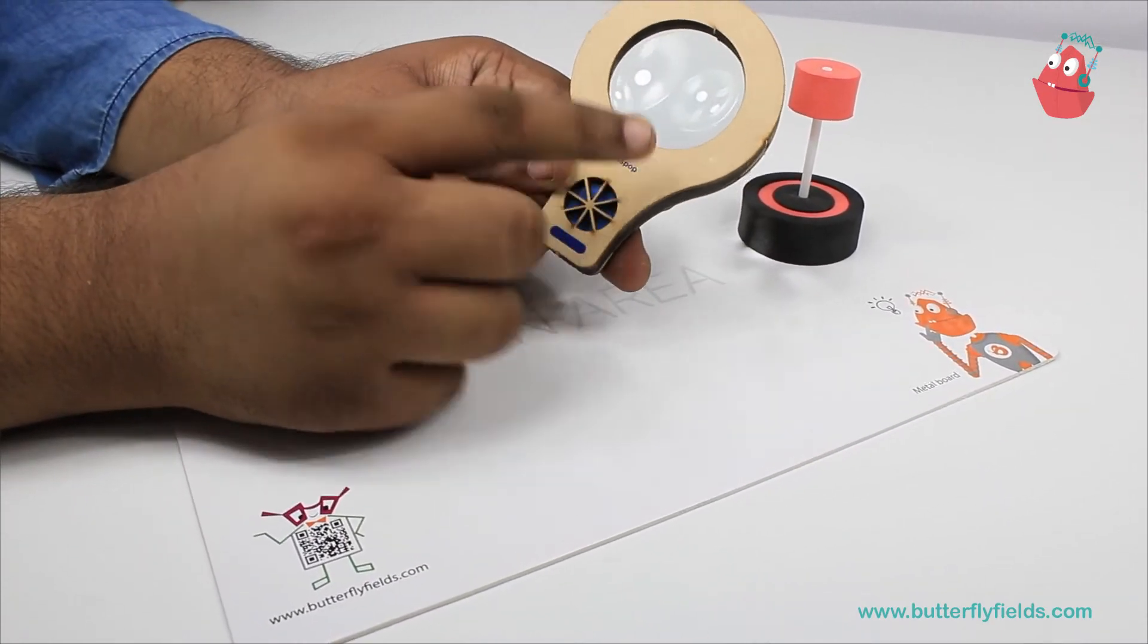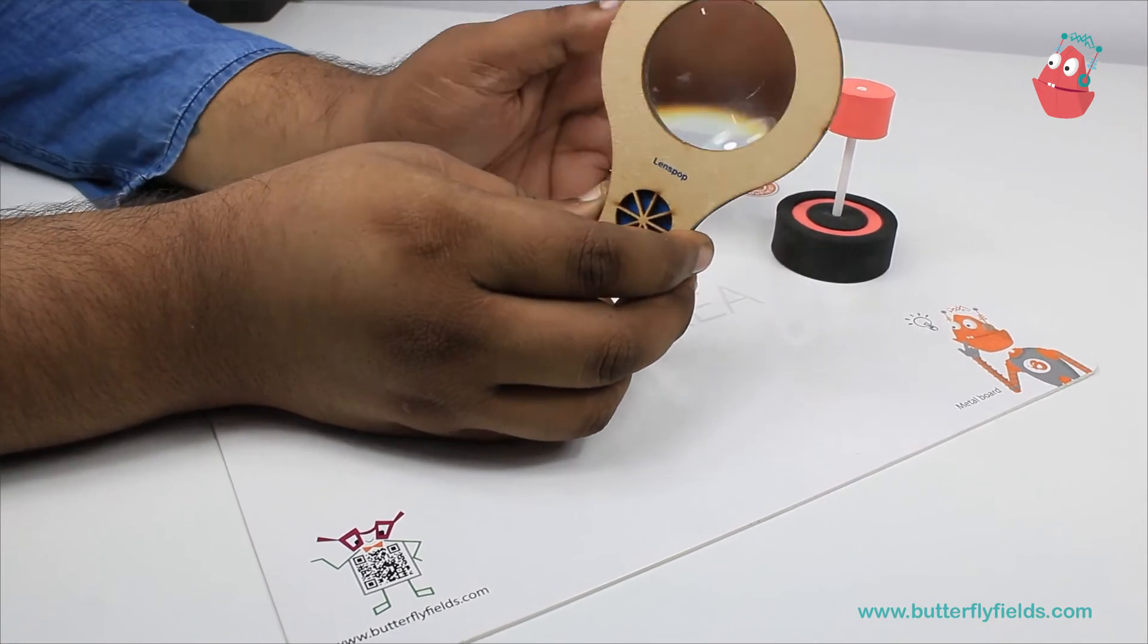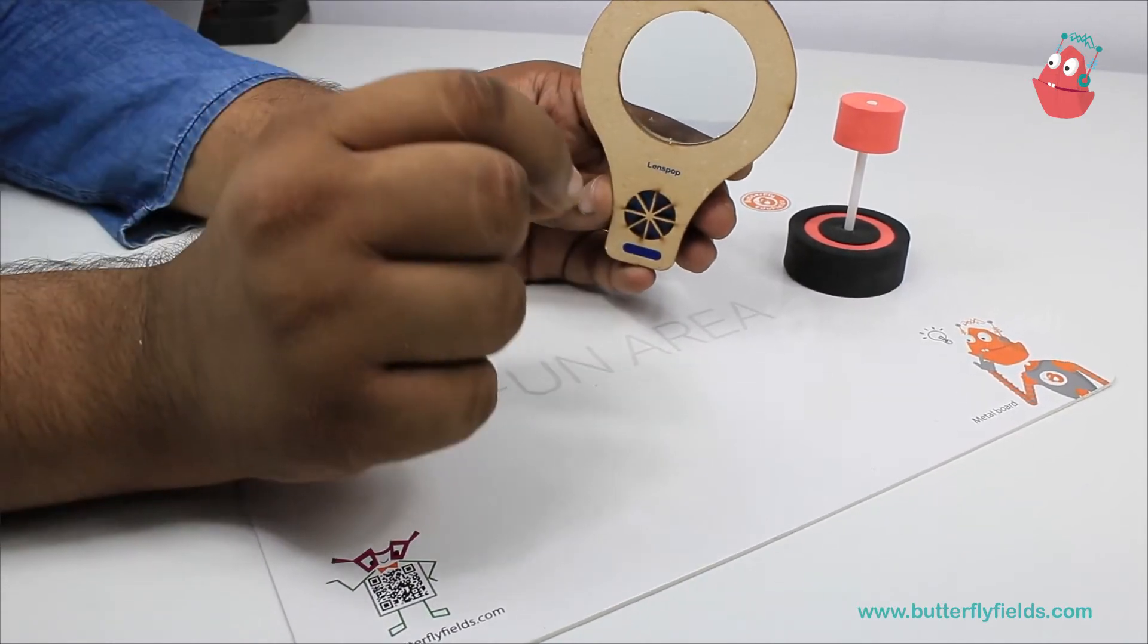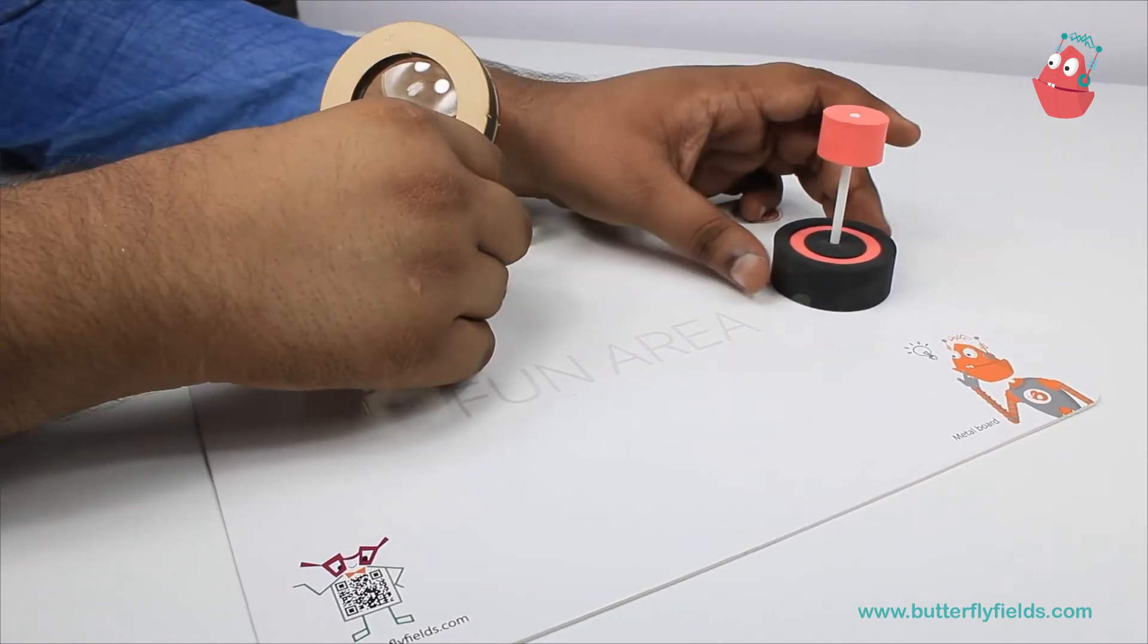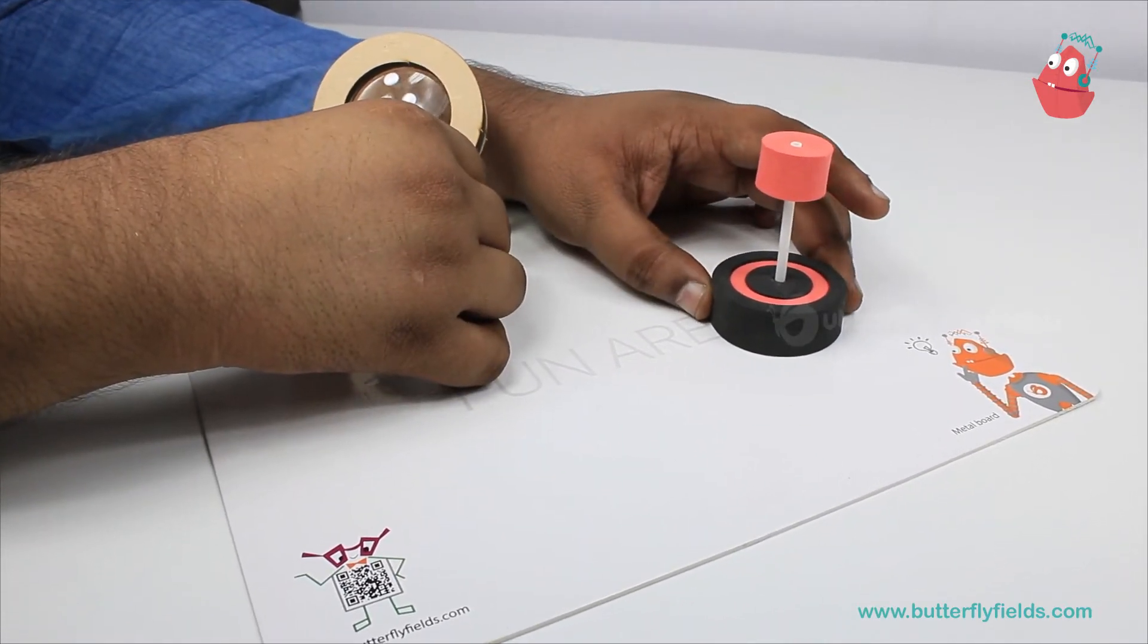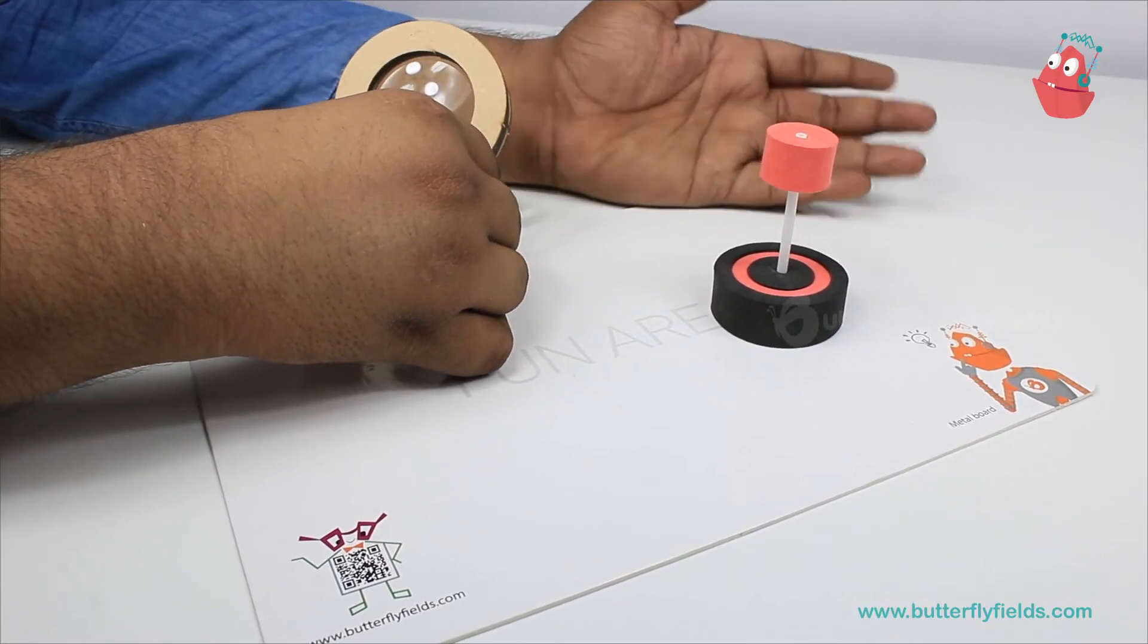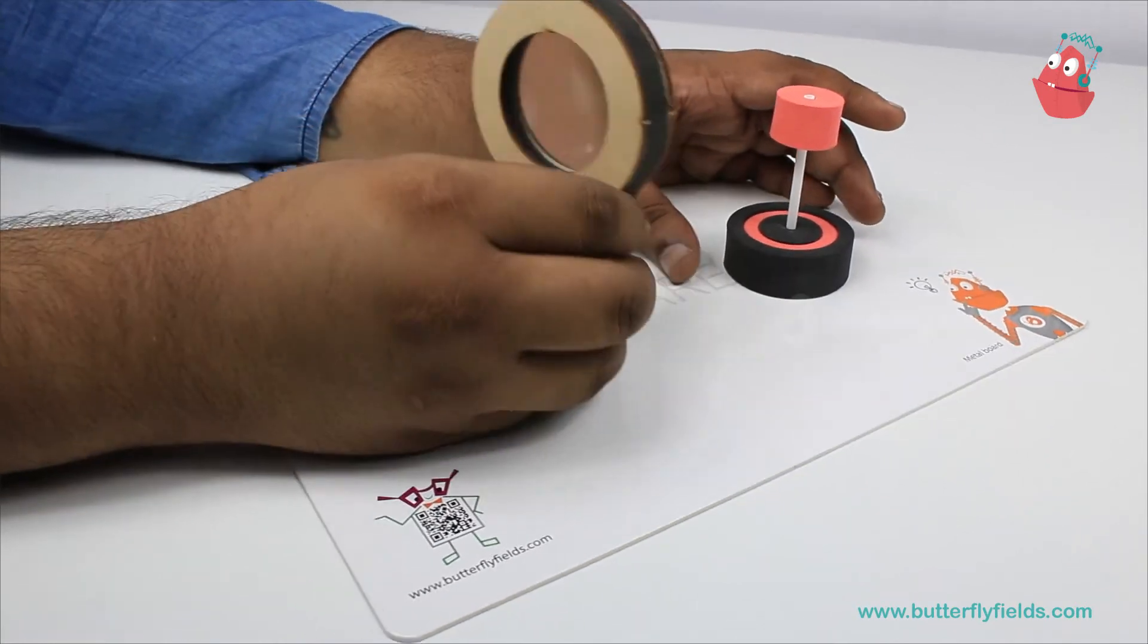Now, this lens here is a convex lens in which when the parallel rays come and pass through this, they all focus at one point. Here I have this object which I have made out of focus bits, but you can use any of your toys or a candle or any object. Now to make it stand, I will use a folder bit.